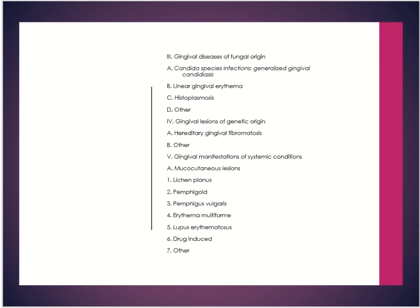Gingival diseases as a manifestation of systemic conditions: when we talk about these, your systemic condition is the predominant cause of your gingivitis. You will more often than not not find any plaque in the oral cavity — it's a clean mouth, but a systemic condition is present. These systemic conditions can include lichen planus, pemphigoid, pemphigus vulgaris, erythema multiforme, or lupus erythematosus. The most common one is benign mucous membrane pemphigoid.